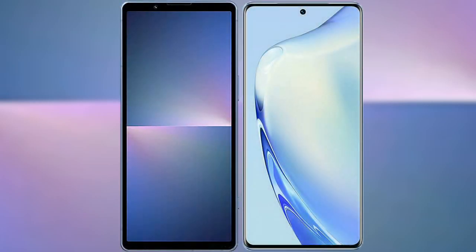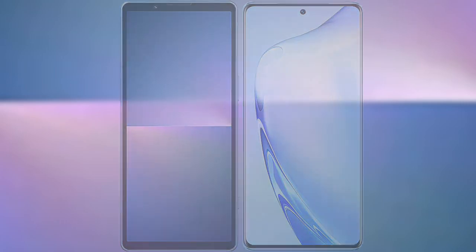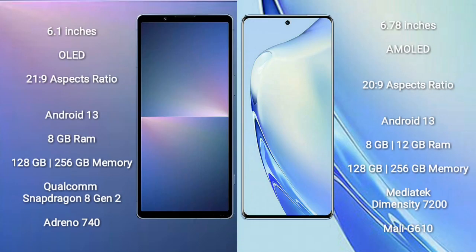I will compare the new Sony Xperia 5 Mark 5 with VIVO V27. The Sony Xperia 5 Mark 5 comes with a 6.1-inch OLED display and an aspect ratio of 21:9. The VIVO V27 comes with a 6.78-inch AMOLED display and an aspect ratio of 20:9.